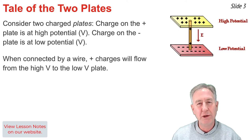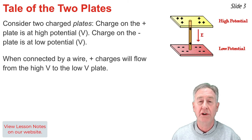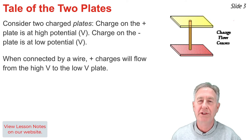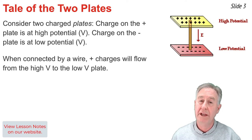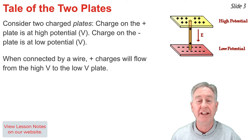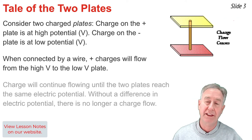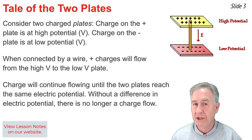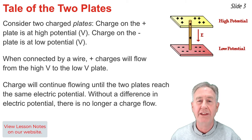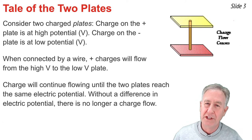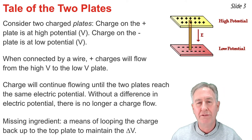But if we were to connect the two plates with a wire, we would begin to observe positive test charges moving in the direction of the electric field. We would notice that the charge on the top plate would begin to diminish as positive charges leave that plate, and as they arrive at the negative plate, the charge of that plate would begin to diminish as well, until finally they reached a total charge of zero. The electric field would no longer be present, and the two plates would be at the same electric potential. When the plates are at the same electric potential, the charge flow ceases.